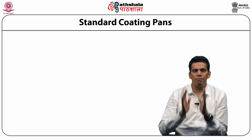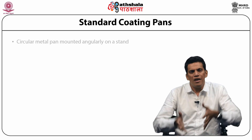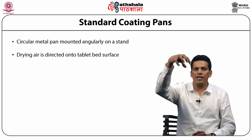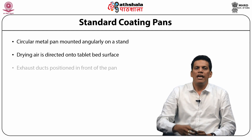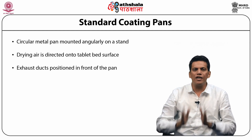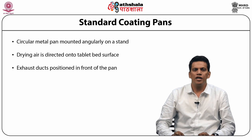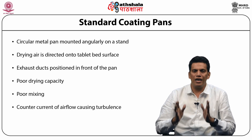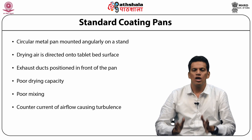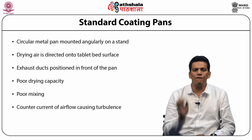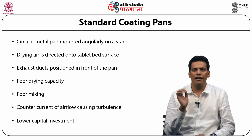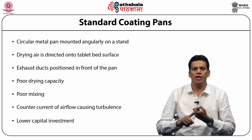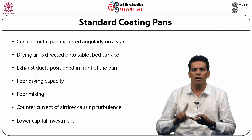Standard coating pans consist of a circular metal pan mounted angularly on a stand. Drying air is directed onto the tablet bed surface, and exhaust ducts are positioned in the front of the pan. Such systems provide poor drying capacity and poor mixing. Countercurrent airflow causes turbulence that can cause tablet breakage. One advantage is lower capital investment. These systems have been modified to form the Pellegrini system, immersion sword system, and immersion tube system.